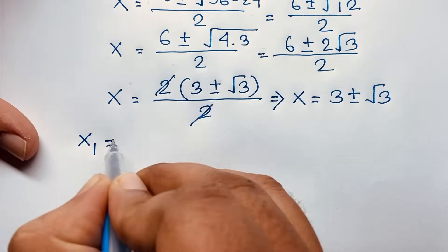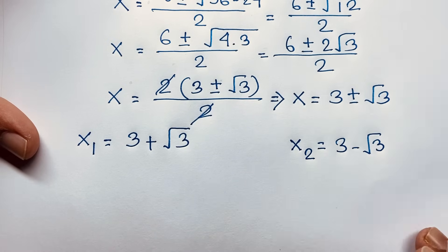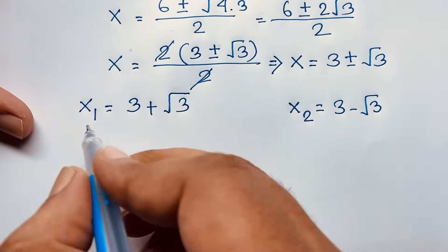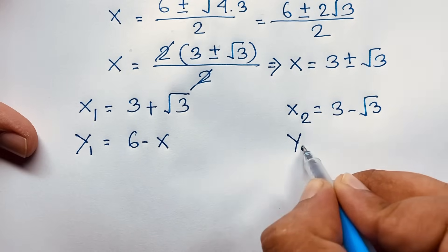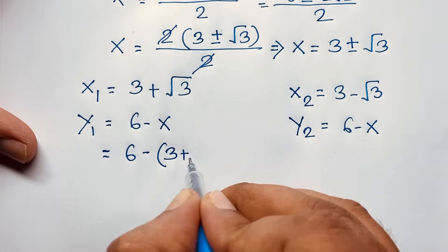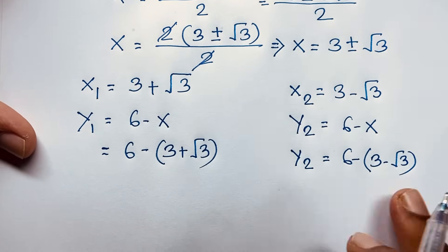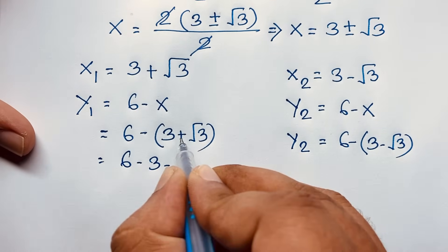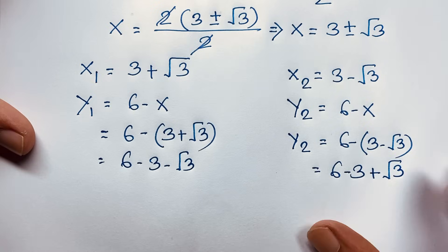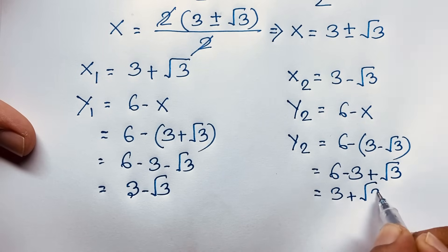So x₁ is equal to 3 plus square root 3, and x₂ is equal to 3 minus square root 3. But what is y? Recall our third equation: y is equal to 6 minus x. So y₁ is equal to 6 minus (3 plus square root 3), which gives 6 minus 3 minus square root 3, and y₂ is equal to 6 minus (3 minus square root 3), which gives 6 minus 3 plus square root 3. Therefore y₁ is equal to 3 minus square root 3, and y₂ is equal to 3 plus square root 3.